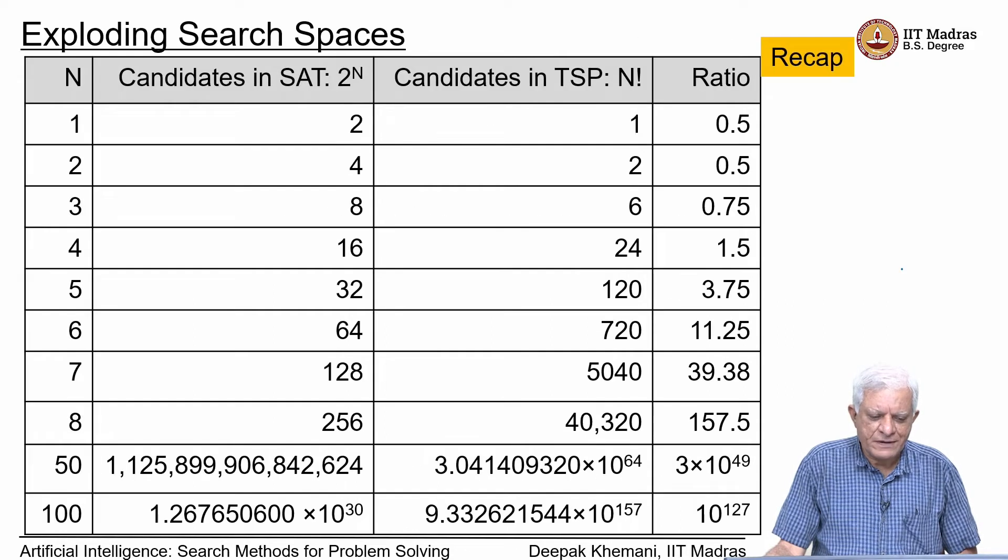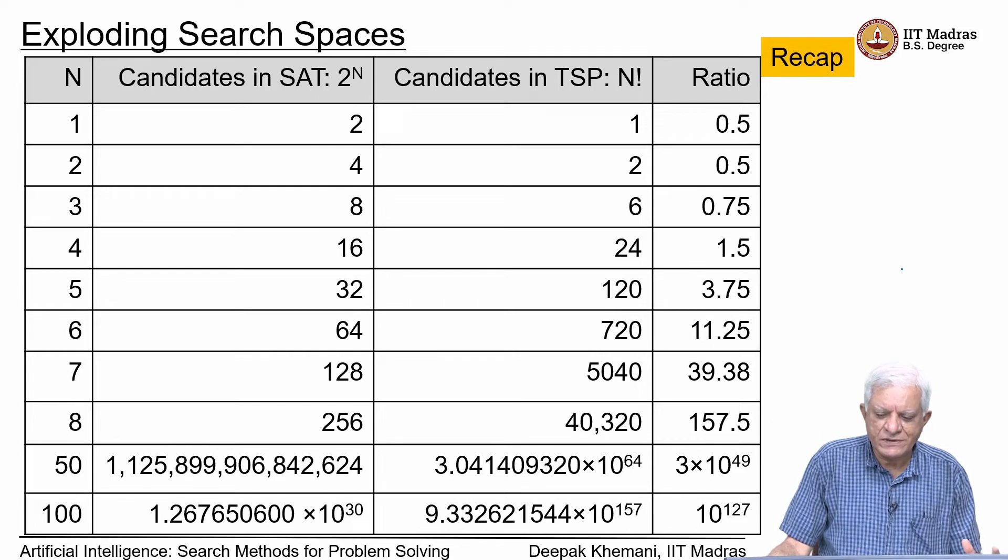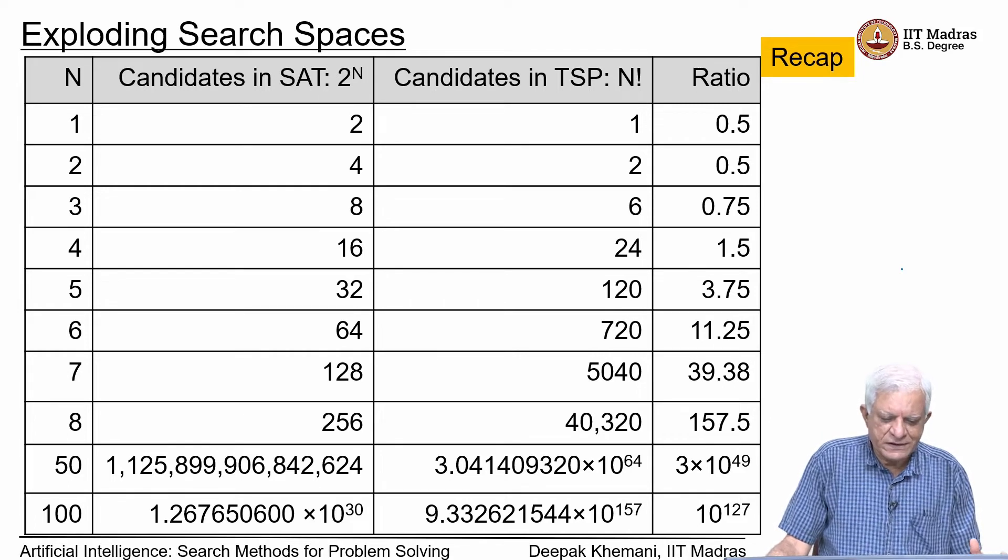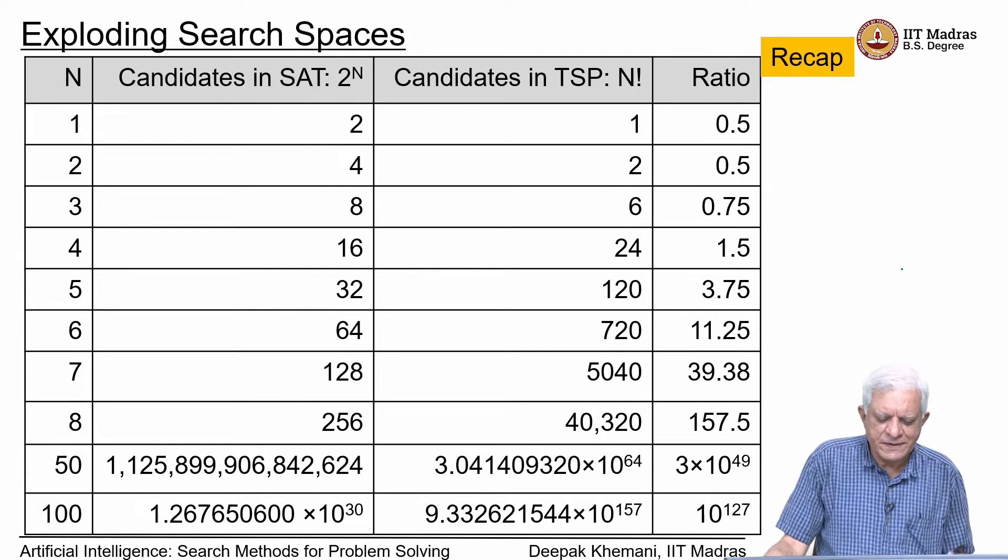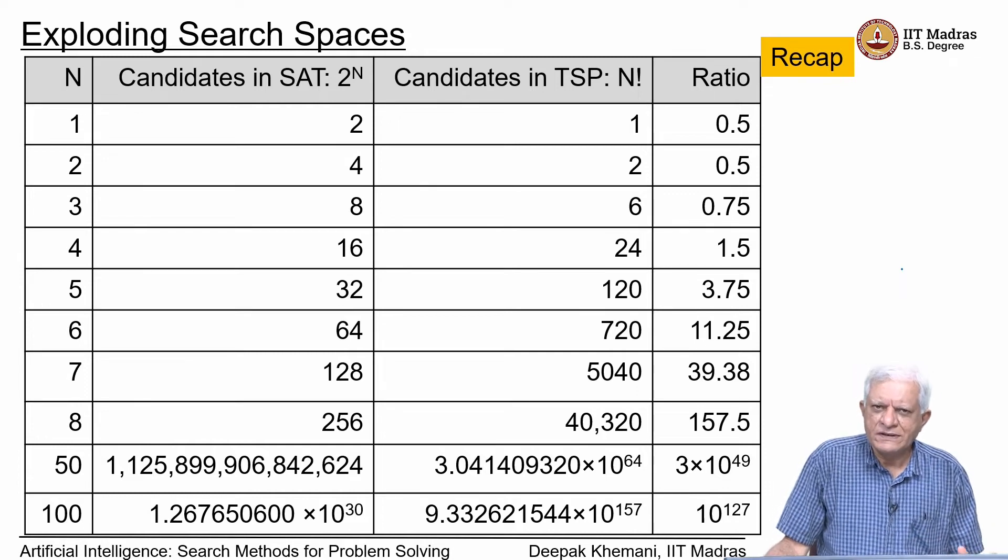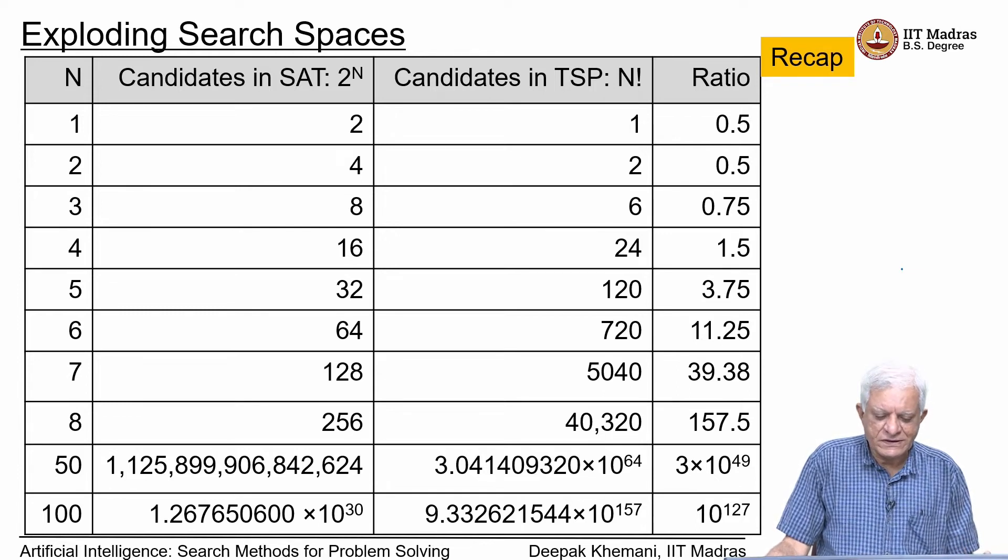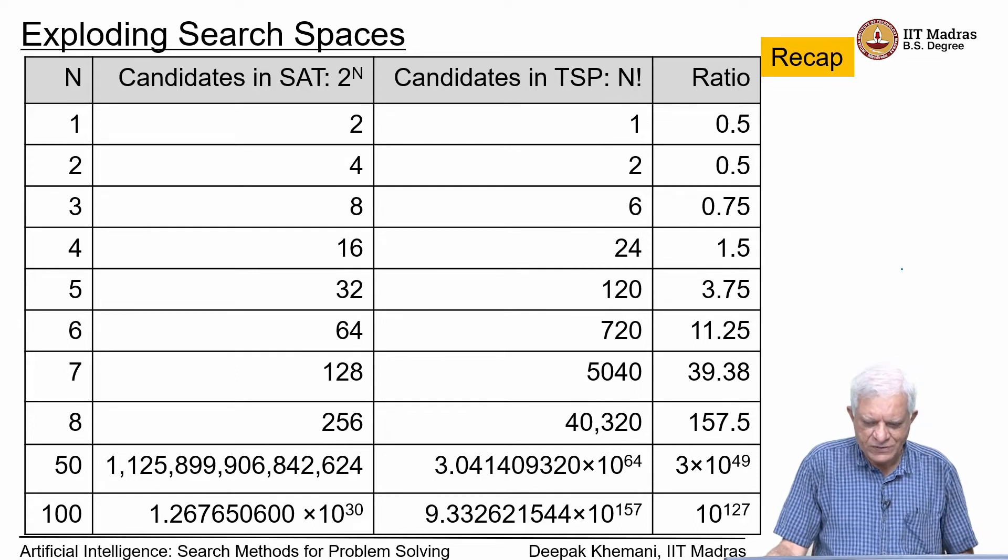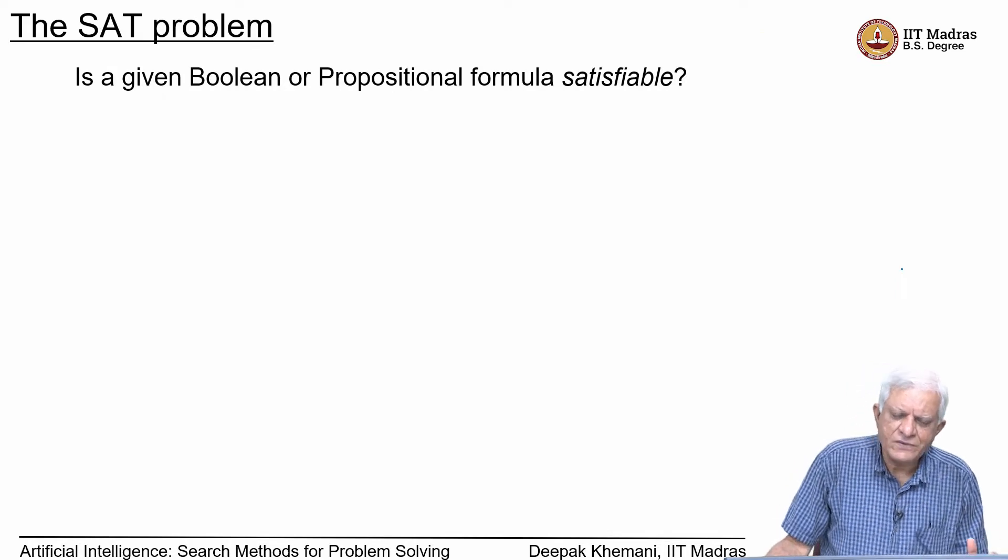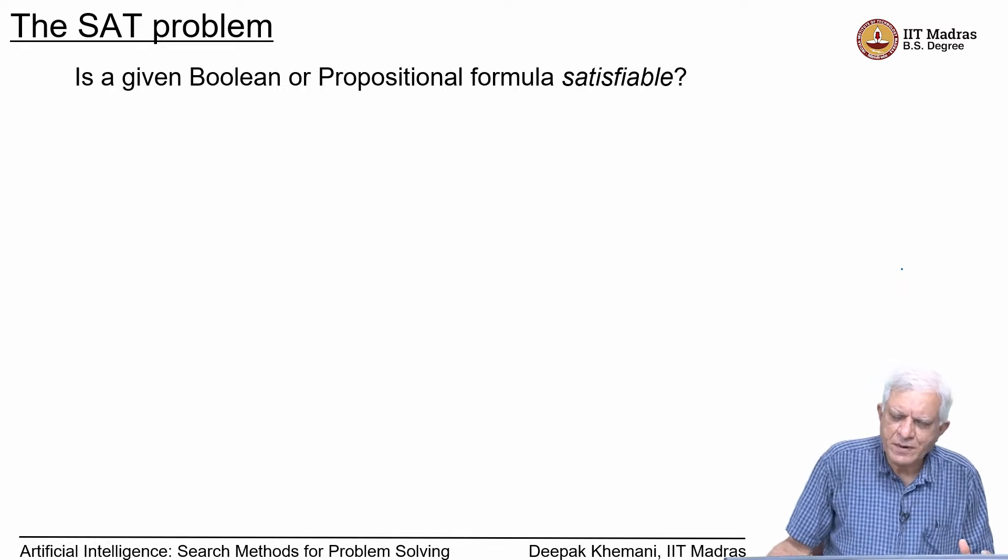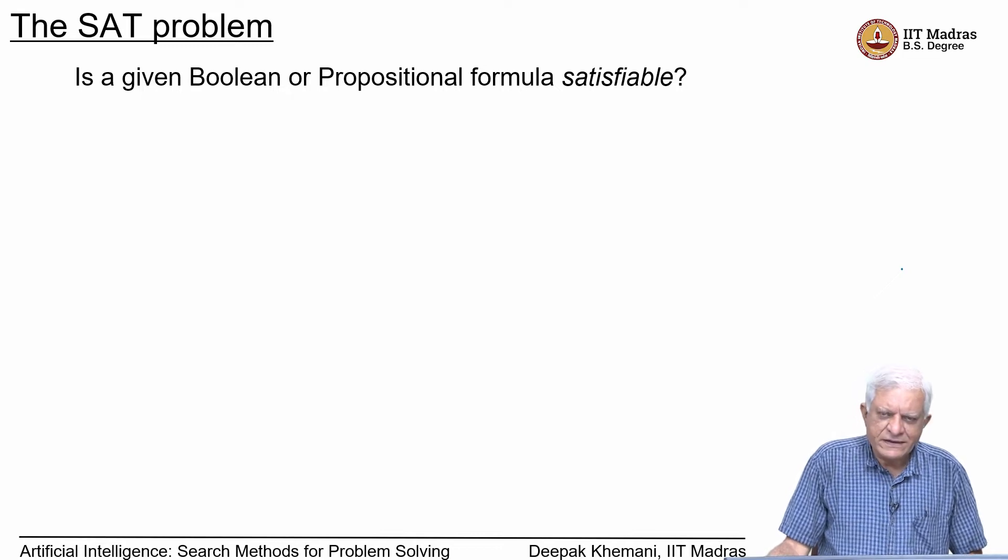This is just a recap as to why we are interested in local search - because the search spaces are too huge. We saw that once n becomes more than 50 or something, the size of the search space becomes too huge to be explored completely. Therefore, we want to use some kind of approach to move towards the solution in a local fashion. Let me again discuss this problem we have been using quite a bit, the SAT problem.